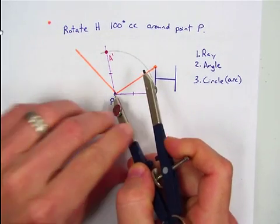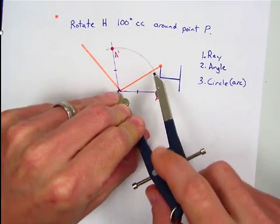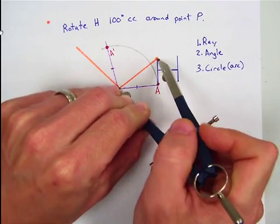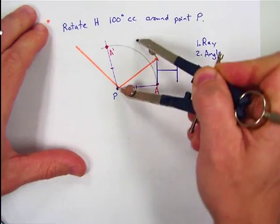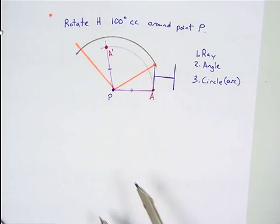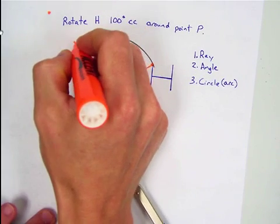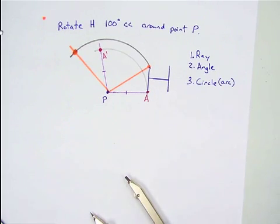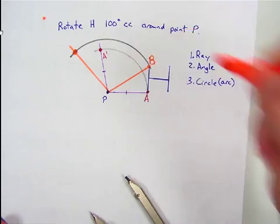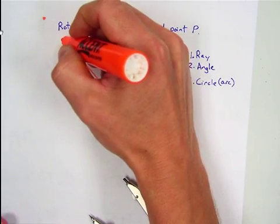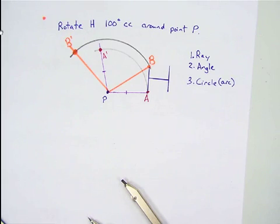So we set P as our center. We open up a new radius to our new point. And we draw that arc. And right there becomes our new point. So we'll call this B. And then this one would be B prime. So you're kind of getting the hang of it.